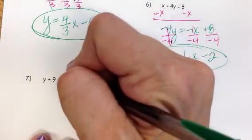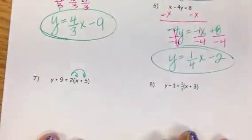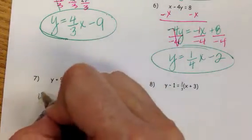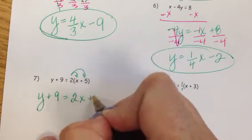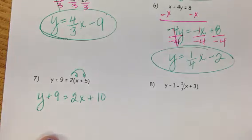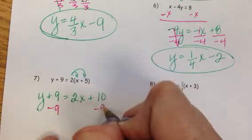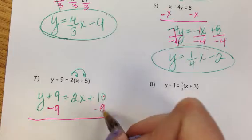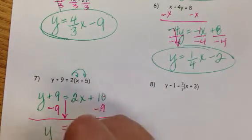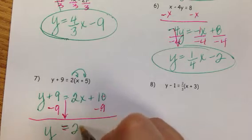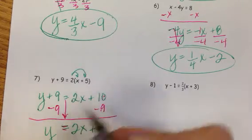Two more. Before I solve for y in number 7, I want to distribute. I'm going to distribute the 2 and wind up with y plus 9 equals 2x plus 10. In order to solve for y, the only thing I need to do is subtract 9 from both sides. I do have like terms—I can take 9 away from the 10. y equals 2x plus 1.